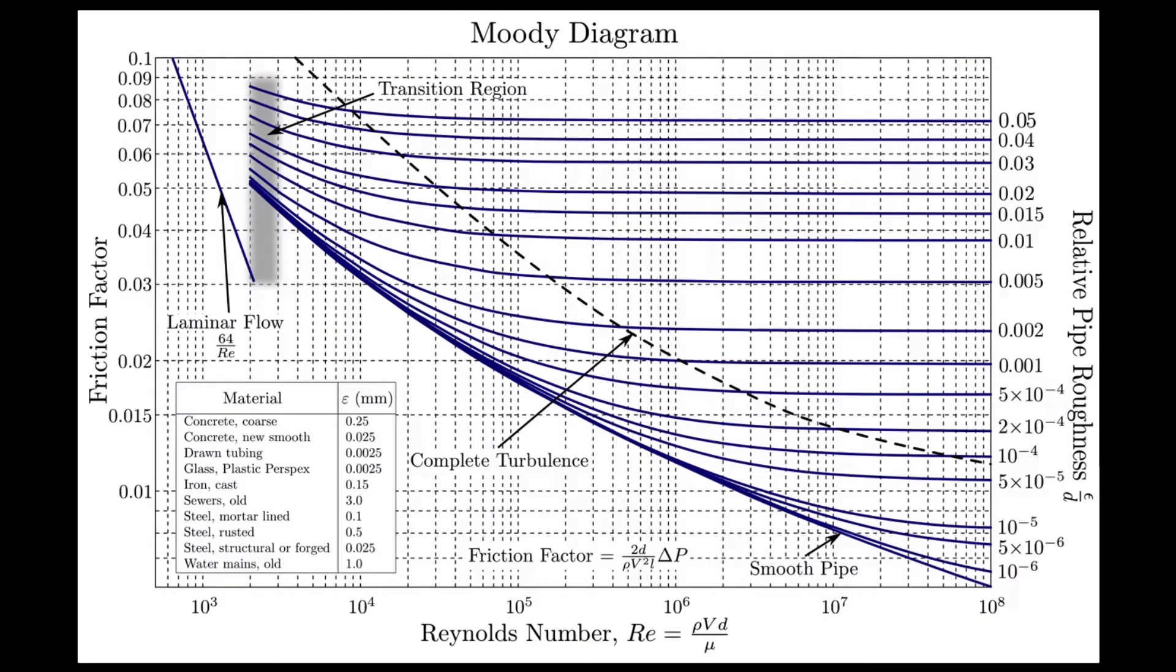We can then go to the Moody diagram and draw a line straight up from this Reynolds number from the x-axis.